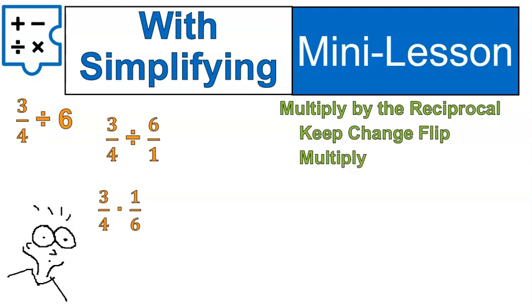Now we're going to multiply. When you multiply, you go top times top, bottom times bottom. 3 times 1 is 3. 4 times 6 is 24. And now we need to simplify.